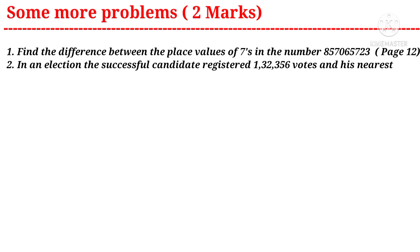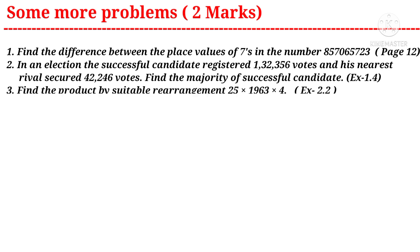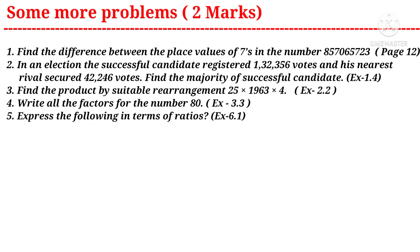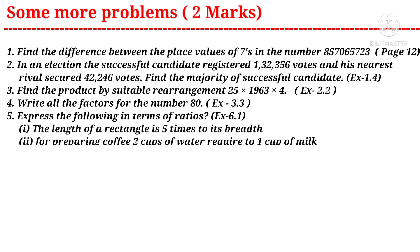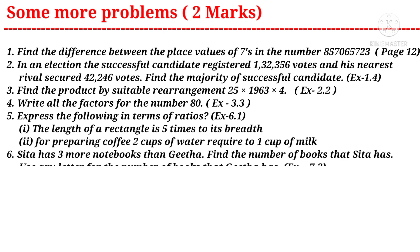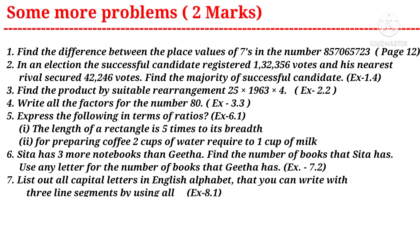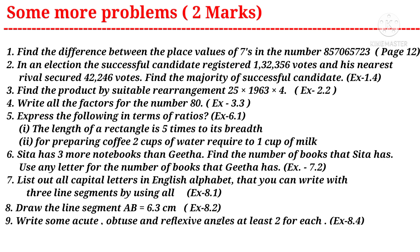Question one: find out the difference between the place values of sevens in the number — a problem from the first chapter. Question two: in an election, the successful candidate registered one lakh thirty two thousand three hundred fifty six votes and his nearest rival secured forty two thousand two hundred forty six votes; find the majority of the successful candidate — also from the first chapter. Question three: find the product by suitable rearrangement of 25 × 1963 × 4 — a question from the second chapter.